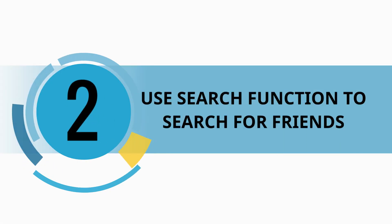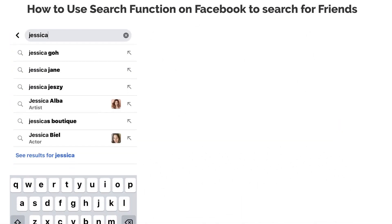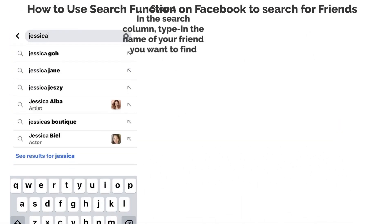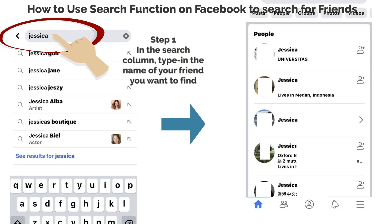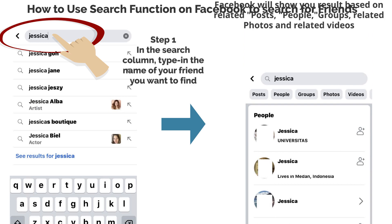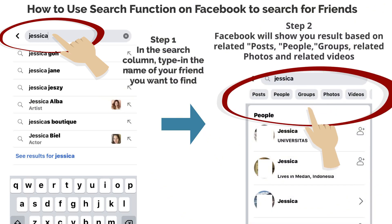Use the search function to search for friends. Step 1: In the search column, type in the name of the friend you want to find. Step 2: Facebook will show you results based on related posts, people, groups, related photos, and related videos.